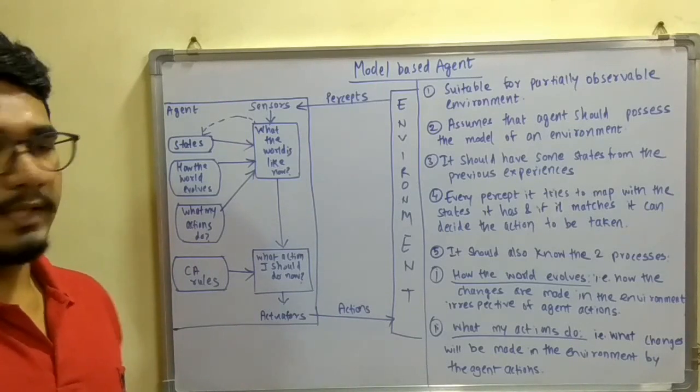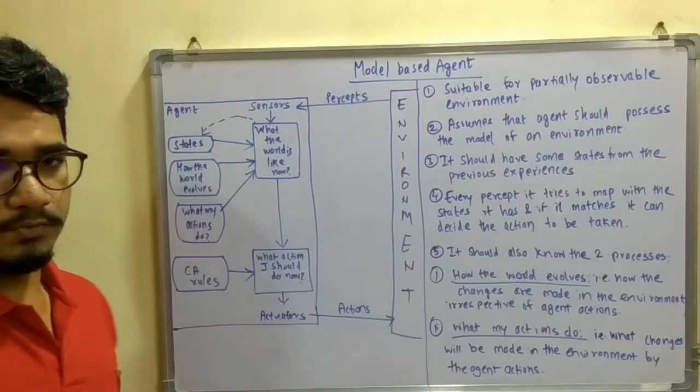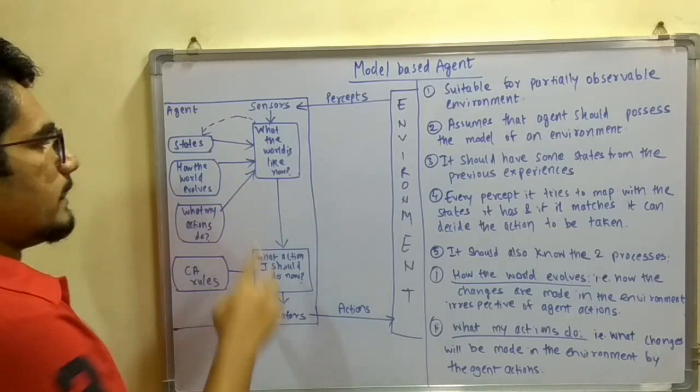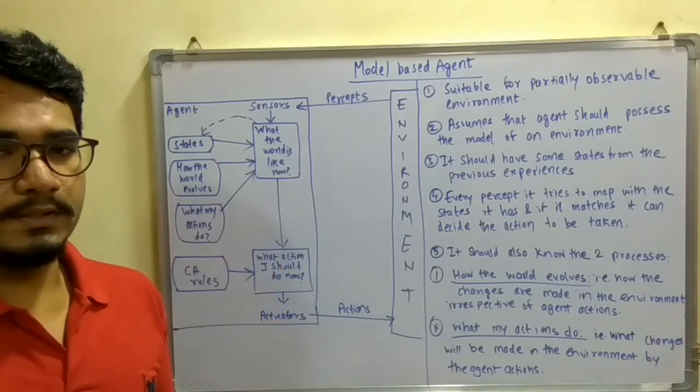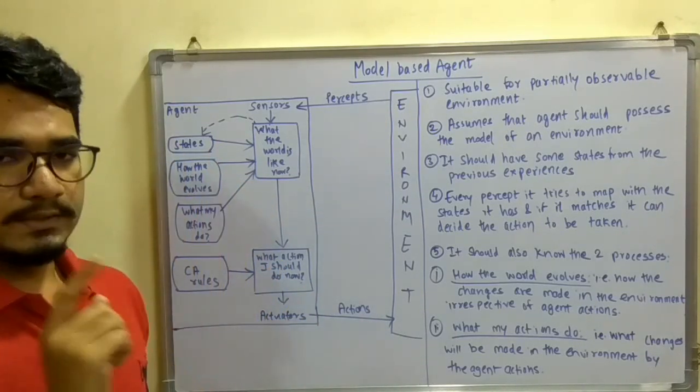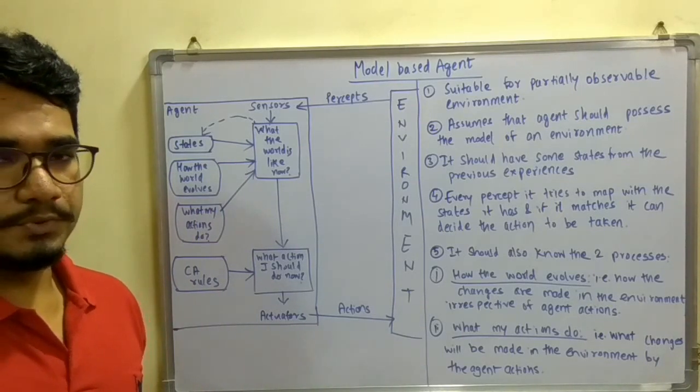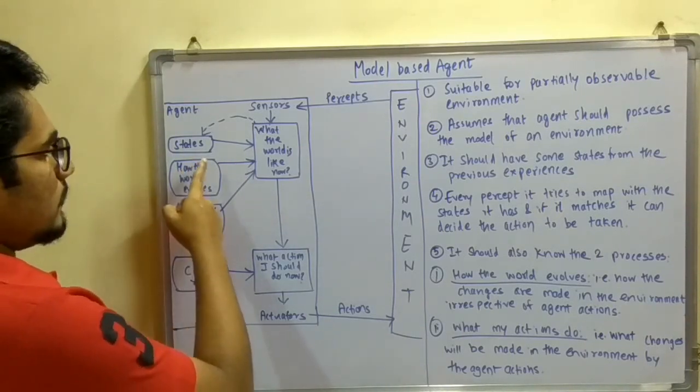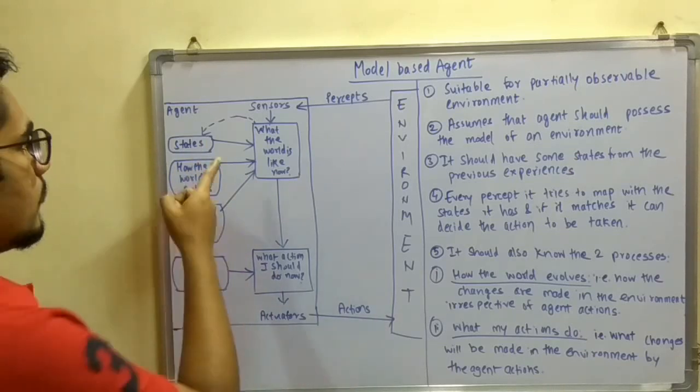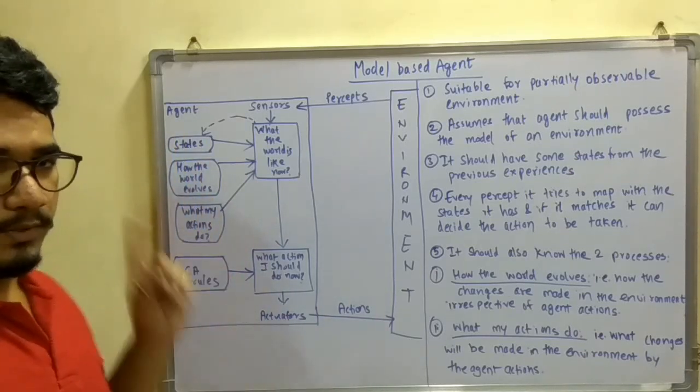Now if an agent perceives with its sensors, the sensors will immediately update that with the states. At the states, there is logic that will map to the current situation and decide whether the previous experience stored here is currently being under execution or not. If yes, then it will execute immediately, or else it will be stored and then updated to the states.